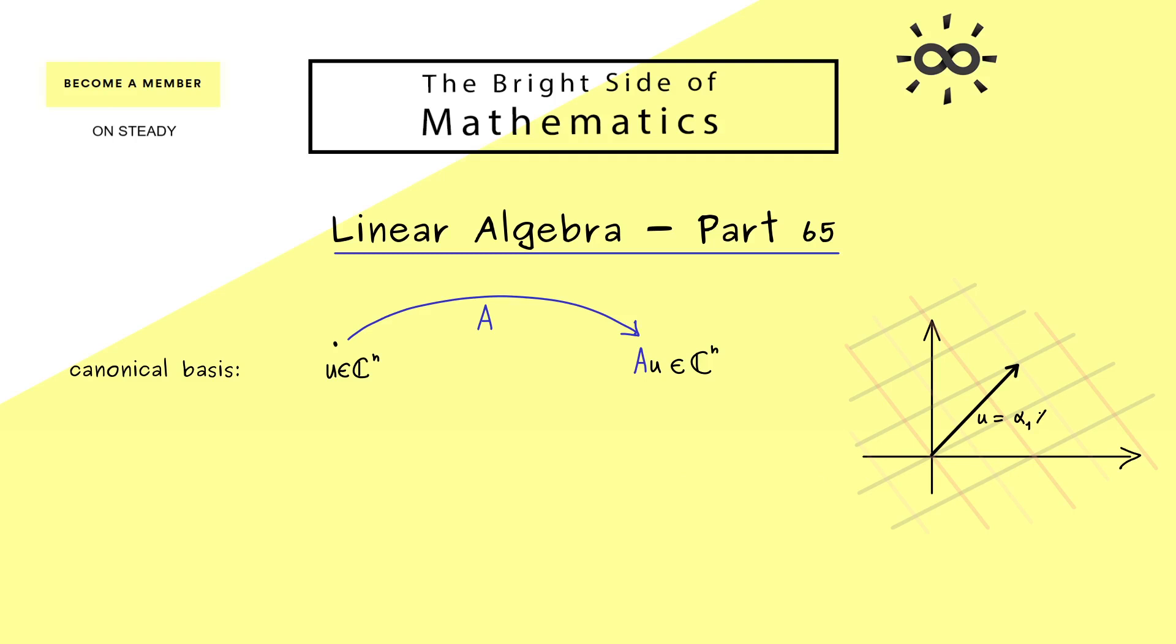This means you describe u with the coordinates u1, u2 and so on, and then you just apply the matrix vector multiplication to get the image in C^n as well. However, now we have learned that we can also use an alternative grid, an alternative coordinate system to describe this operation. And indeed for this one we need eigenvectors of A, and then we can simply rewrite u as a linear combination of the eigenvectors.